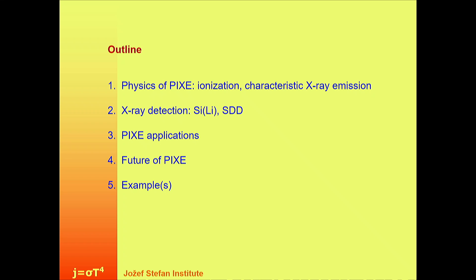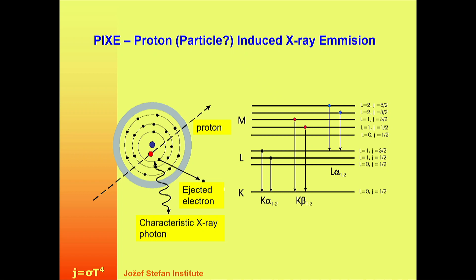The future has already started — I will show you some examples. The process responsible for detection of X-rays from a target when you irradiate with protons is inner shell ionization. Then in the second step of the process, inner shell vacancies are created. After the electron is ejected, these vacancies are filled with outer shell electrons, and then you have a series of so-called characteristic X-rays. They have quite strange notations that are still used, although they are historical ones.